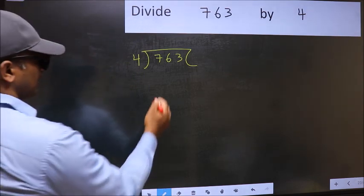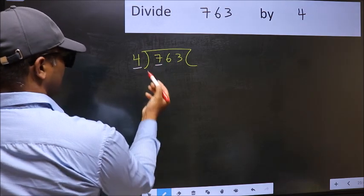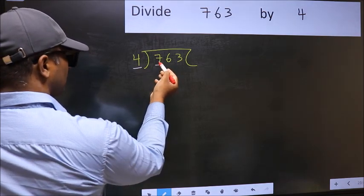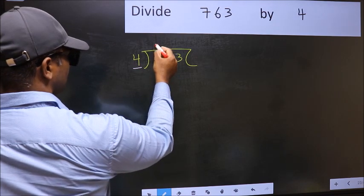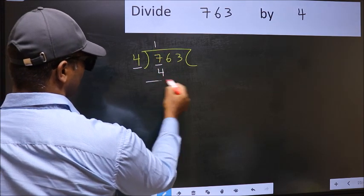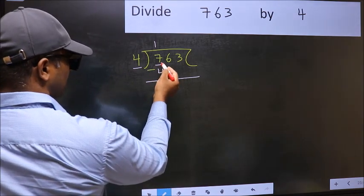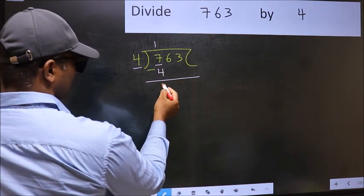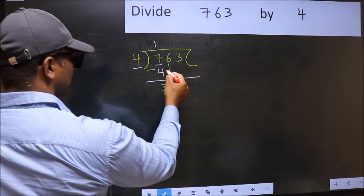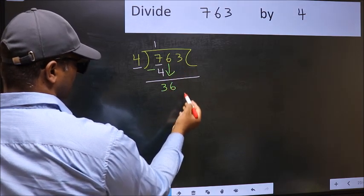Here we have 7 and here 4. A number close to 7 in 4 table is 4 once 4. Now you should subtract 7 minus 4, which is 3. After this, bring down the beside number. So 6 down.